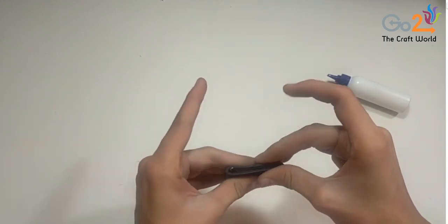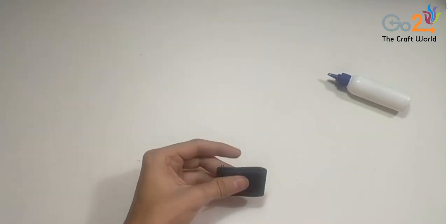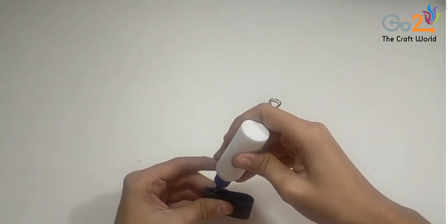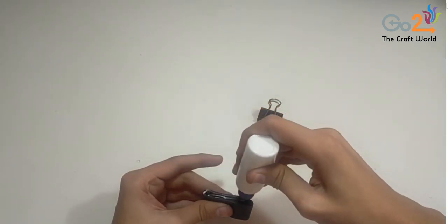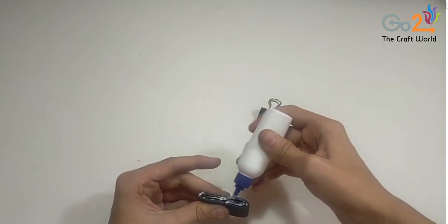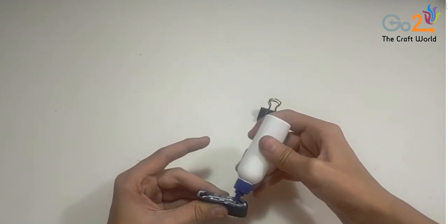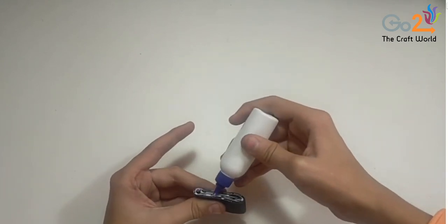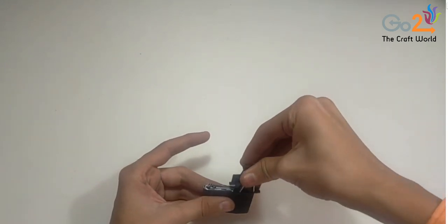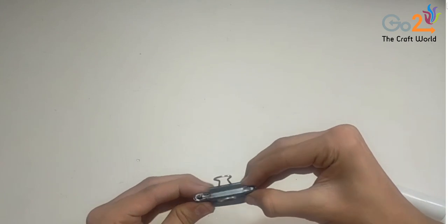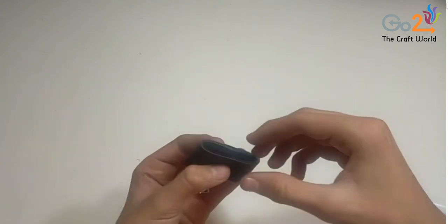So now we will apply the glue on the edges like this and we will use the clip to hold it. Do the same with the other side.